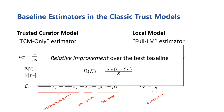Recall that our goal is to design a hybrid estimator that performs competitively against, or preferably outperforms, the baseline estimators. Towards this, we define the relative improvement of a hybrid estimator over the best baseline estimator as this ratio between the better of the two baselines' errors and the error of the hybrid estimator.